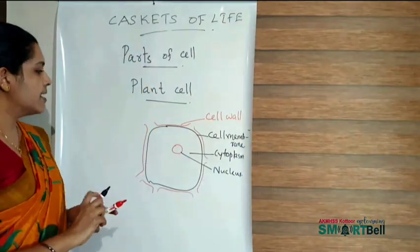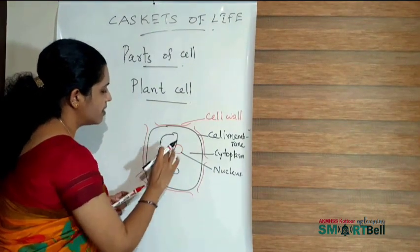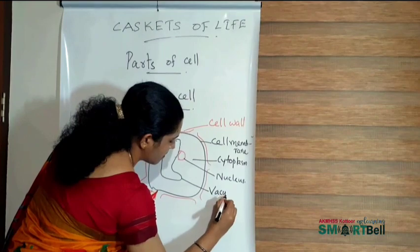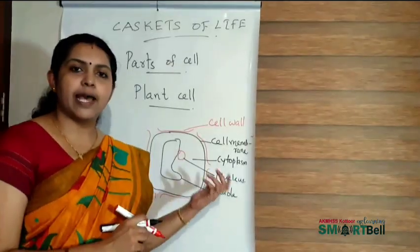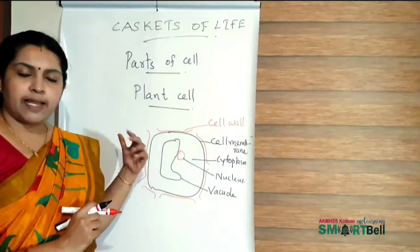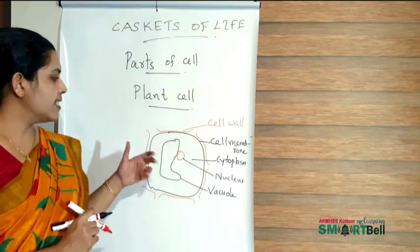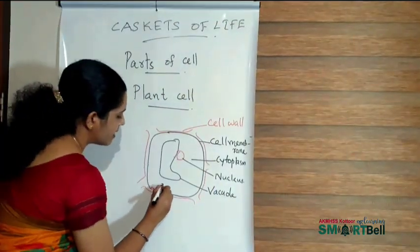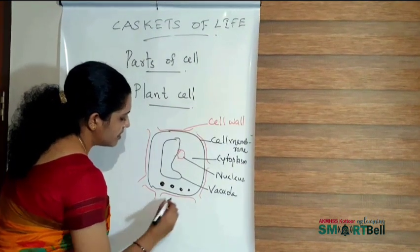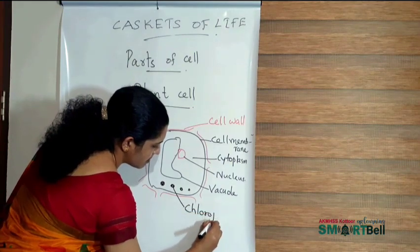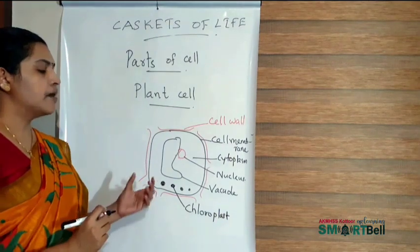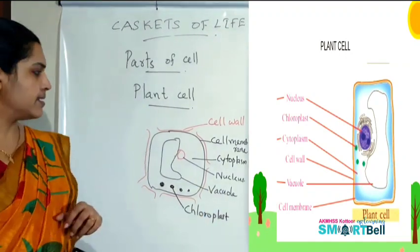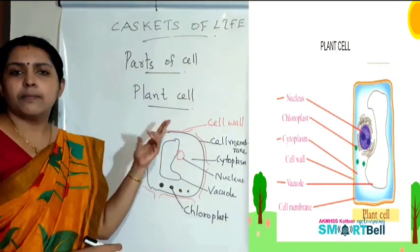In the plant cell, we can observe a large vacuole. The vacuole generally stores fat, lipids, etc. Comparing with the animal cell, the vacuole is large in the plant cell. We can also see small green-colored parts called chloroplasts. Chloroplasts are found only in plant cells and are known as the food factories of the plant.